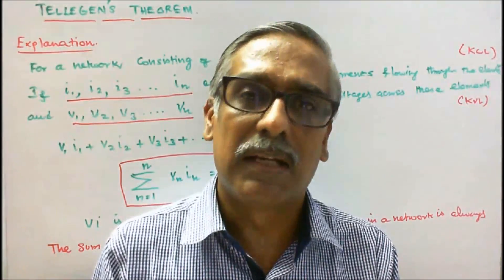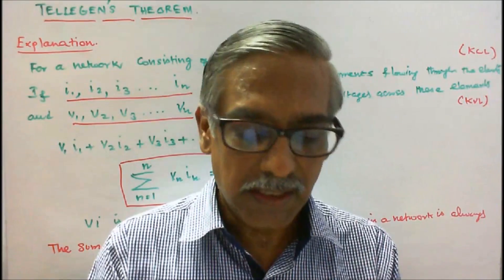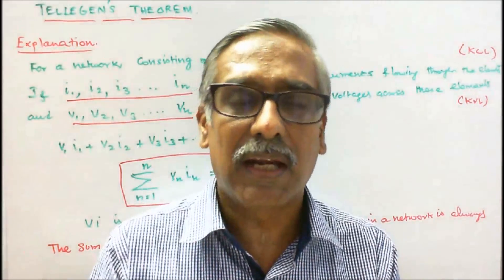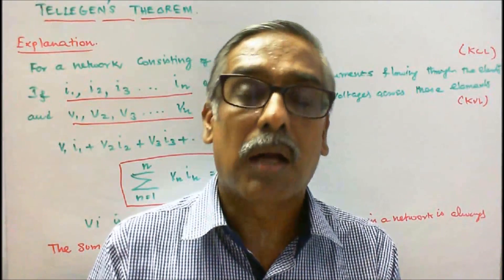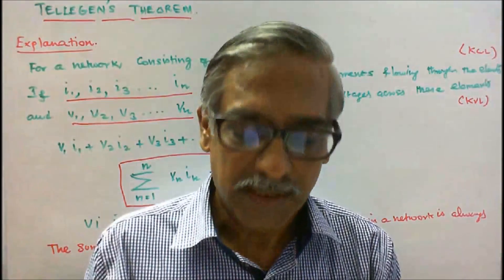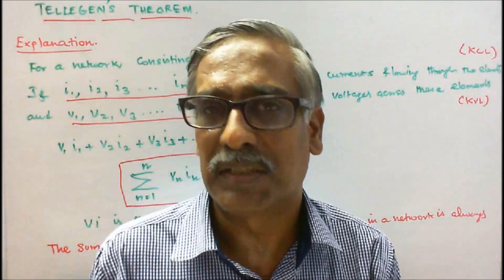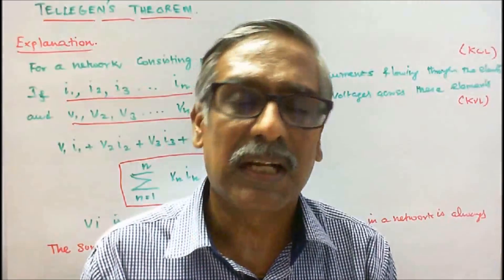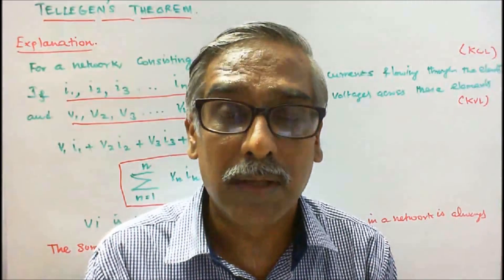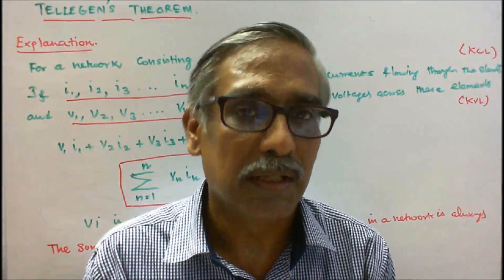Limitation of Tilligan's theorem: this theorem can be used for any lumped network, which may be linear or nonlinear, passive or active, or time varying or time invariant. A lumped network is usually a simplification of a distributed network such as a transmission line. A transmission line has built-in resistance, inductance, and capacitance for every tiny fraction of its length. That's called a lumped network.